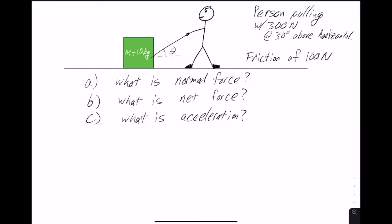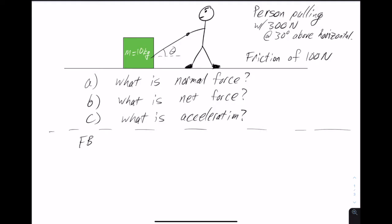We want to know basically everything there is to know about this box: what is the normal force, what is the net force, and what is the box's acceleration? The first thing to do with a force problem is always to draw the free body diagram. And even before we do that, we can pick our axes. In this case, we use the common choice of positive x pointing to the right and positive y pointing up.